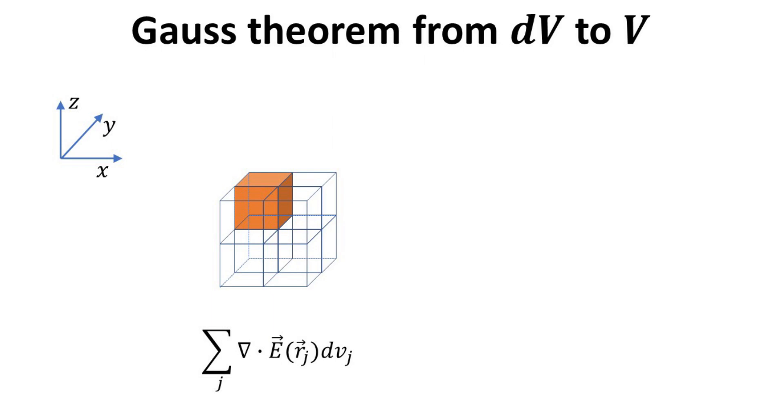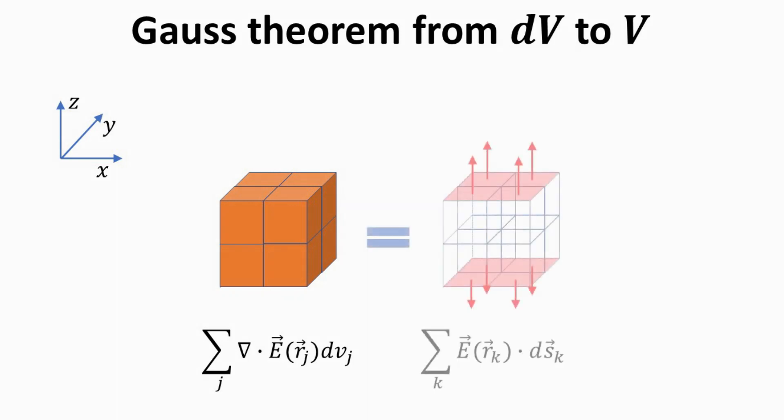In summary, the total divergence of a volume V is given by the sum of the divergences of the elemental volumes that make up the volume, as depicted here. Computing the divergence this way is the same as computing the total fluxes that emanate from the surfaces that enclose the volume V as shown.